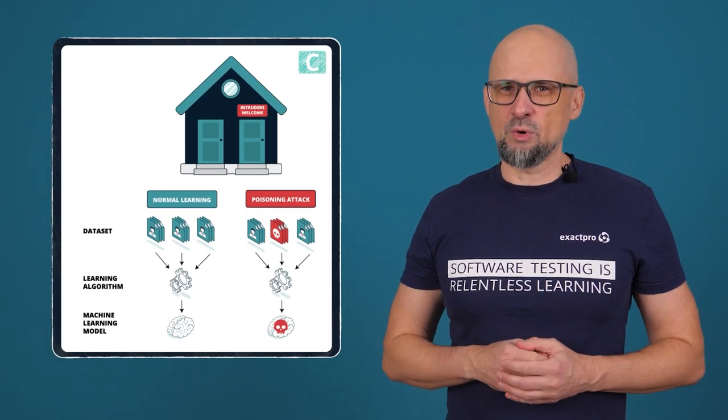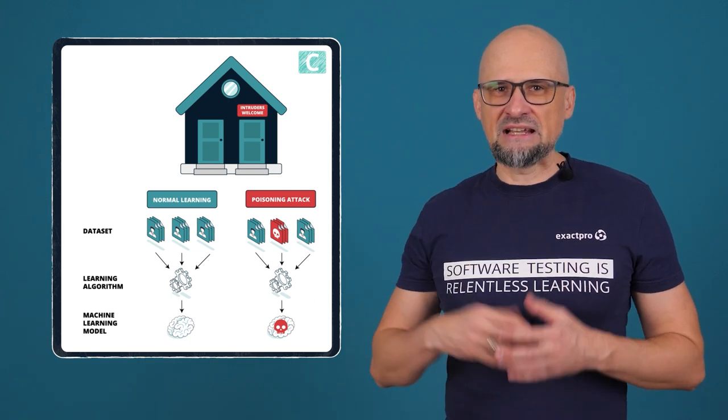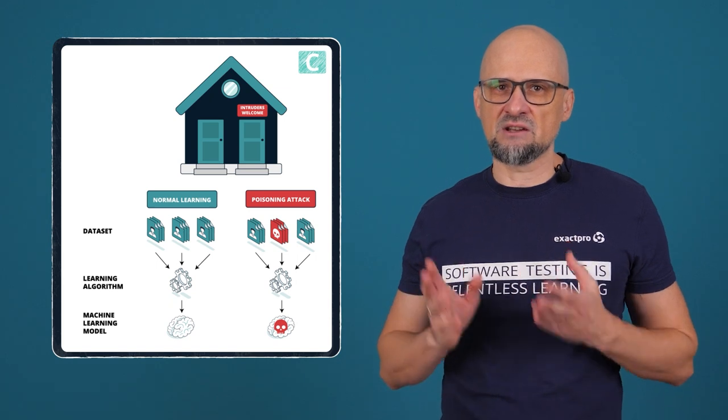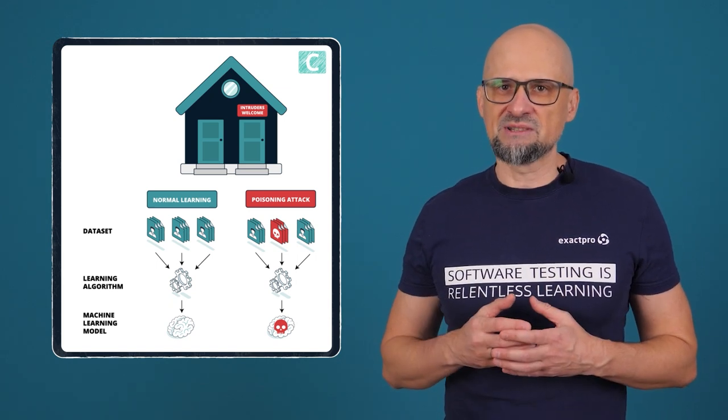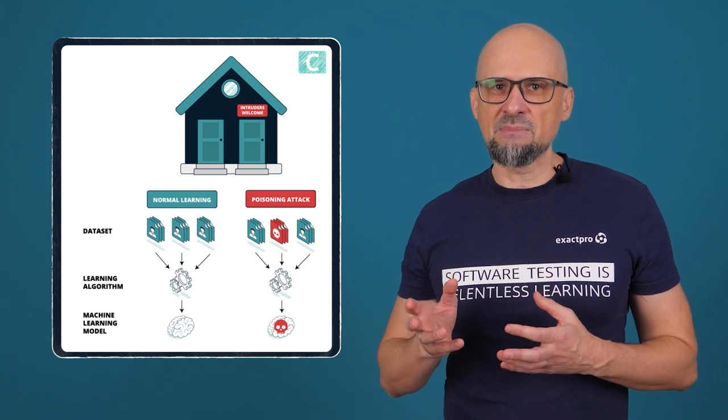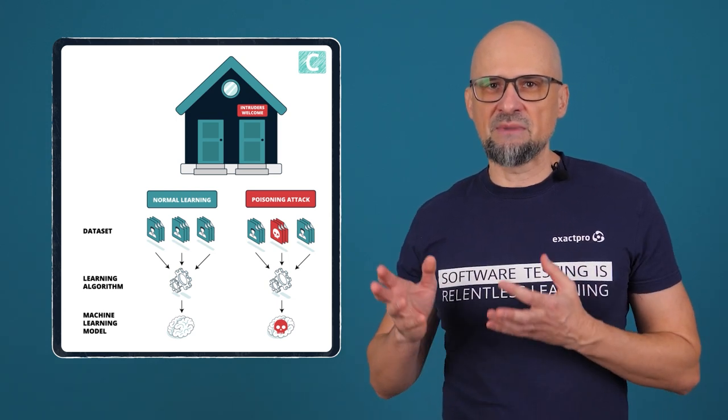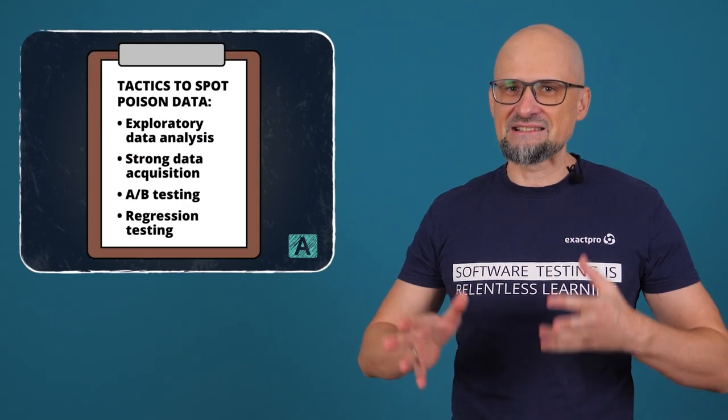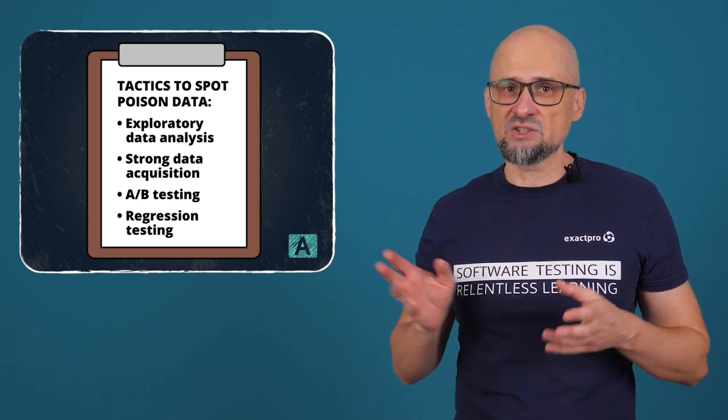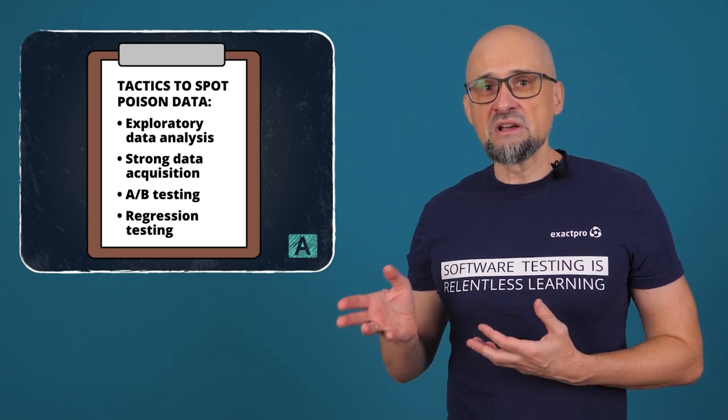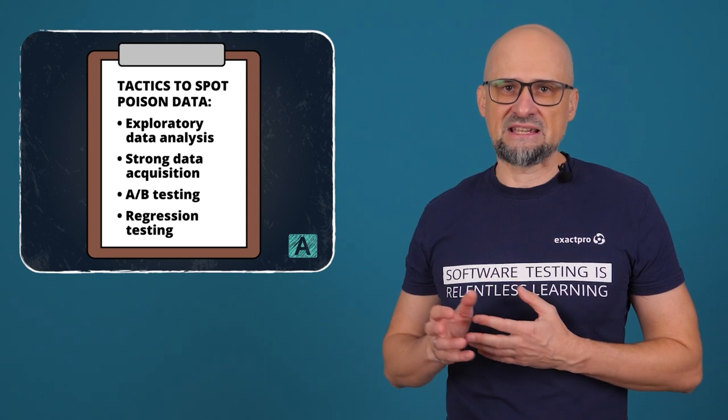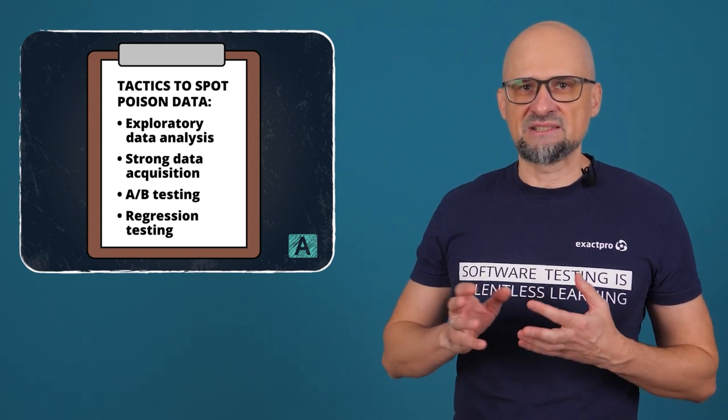Next is data poisoning. Data poisoning attacks have two aims: inserting backdoors for future intrusions or corrupting training data so it gives incorrect predictions. Poisoning attacks may also cause the machine learning system to misclassify in specific situations. A common example is falsely reporting spam emails as not being spam. Various tactics can help us spot poison data. For instance, exploratory data analysis shows poison data as outliers. Also, strong data acquisition policies can ensure the origins of training data, limiting the chances of it being poisoned.